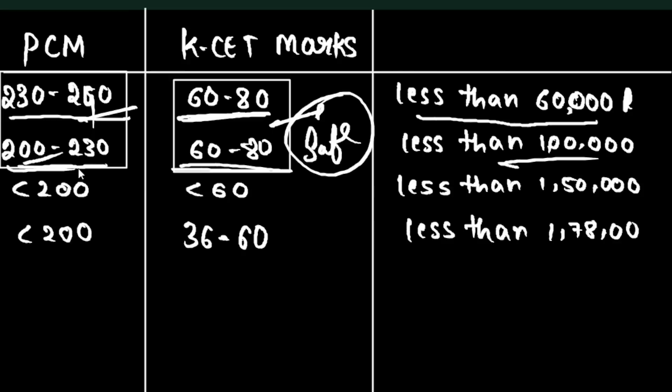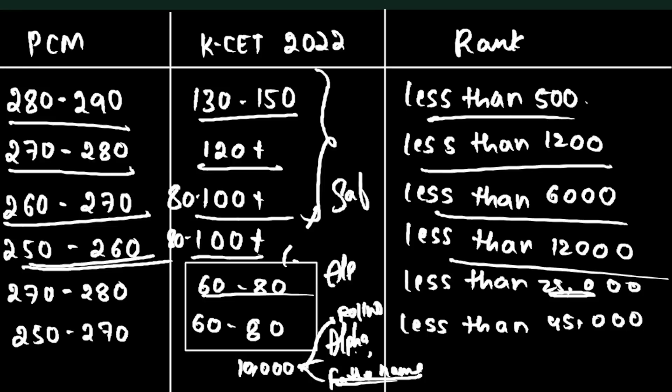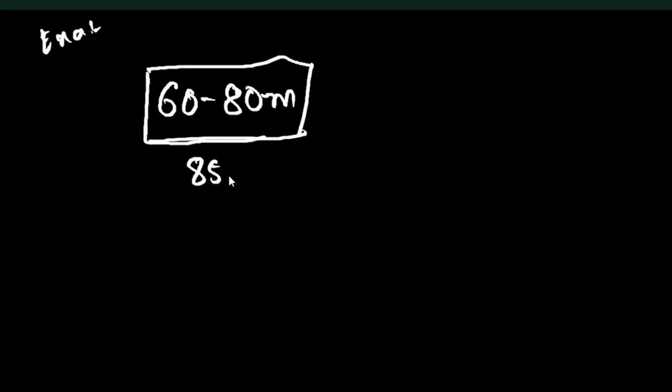If your board marks are less than 200 in PCM and K-CET marks are less than 60, you'll get below 1 lakh rank. This is based on analysis. About 50% of students - that's 85,000 out of 1,78,000 - fall in this category. If you're getting 200+ in boards, you'll get around 15,000 rank.